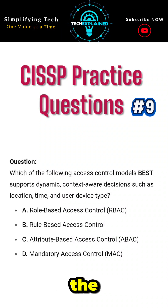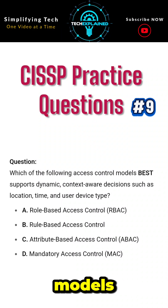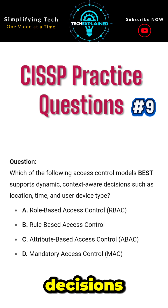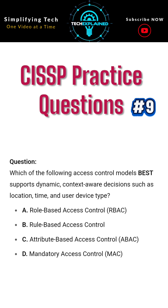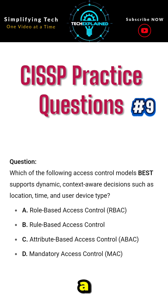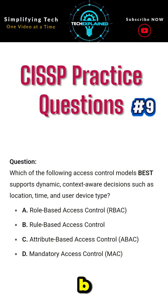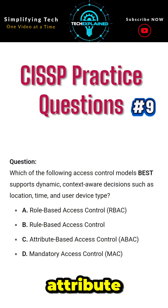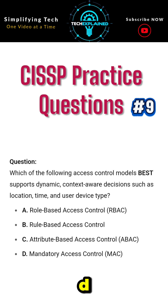Which of the following access control models best supports dynamic, context-aware decisions such as location, time, and user device type? A. Role-based access control. B. Rule-based access control. C. Attribute-based access control. D. Mandatory access control.